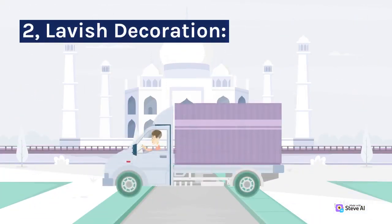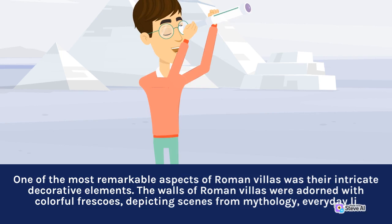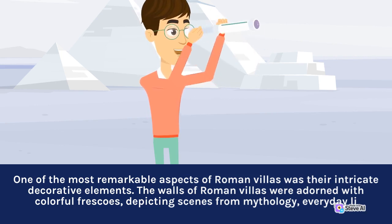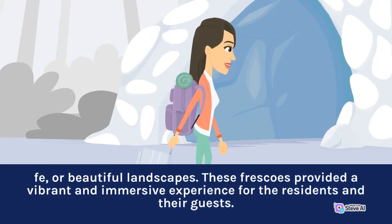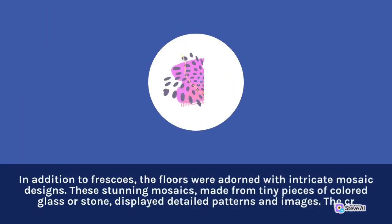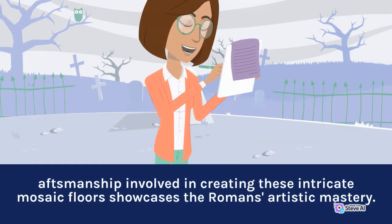2. Lavish Decoration. One of the most remarkable aspects of Roman villas was their intricate decorative elements. The walls of Roman villas were adorned with colorful frescoes, depicting scenes from mythology, everyday life, or beautiful landscapes. These frescoes provided a vibrant and immersive experience for the residents and their guests. In addition to frescoes, the floors were adorned with intricate mosaic designs. These stunning mosaics, made from tiny pieces of colored glass or stone, displayed detailed patterns and images. The craftsmanship involved in creating these intricate mosaic floors showcases the Romans' artistic mastery.